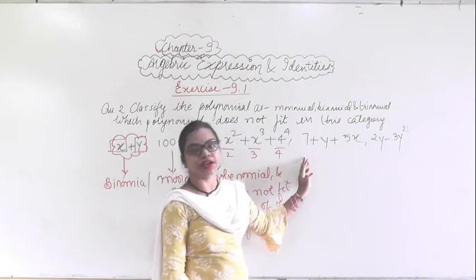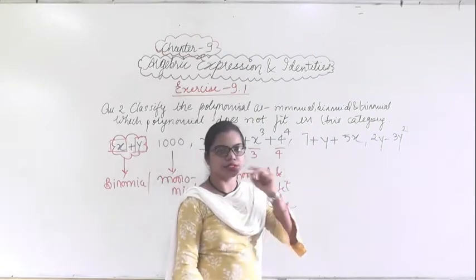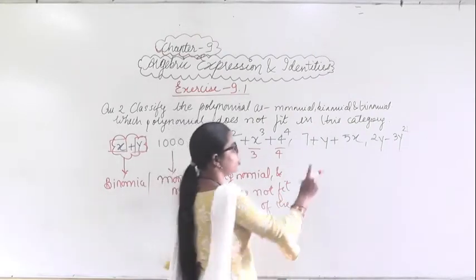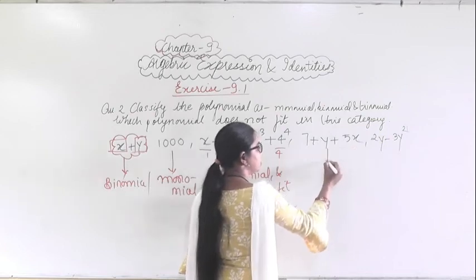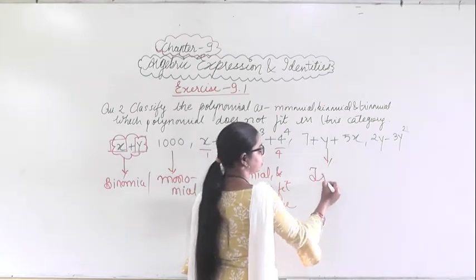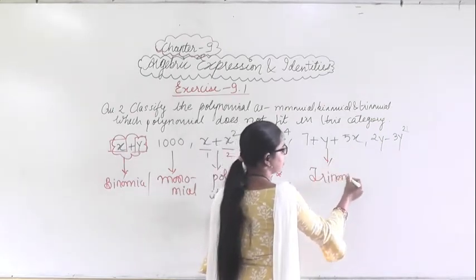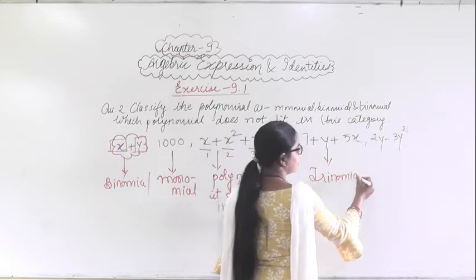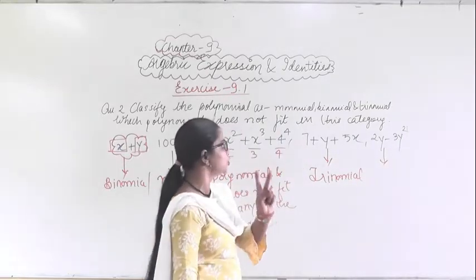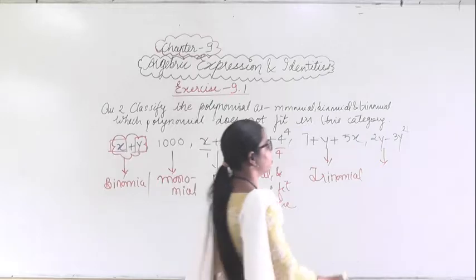Similarly, here you are given with 7 + 5 + 5, which has 3 terms, so it is a trinomial. And 2y minus 3y has 2 terms, so this is a binomial.